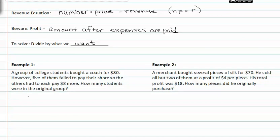In example one, we see that a group of college students bought a couch for eighty dollars. So there were a number of students each paying a price to get an eighty dollar couch. However, five of them failed to pay their share, so the others had to each pay eight dollars more. So the number of students went down by five, and the cost or the price went up by eight dollars. But the couch still equaled eighty dollars.